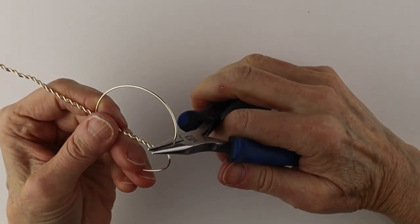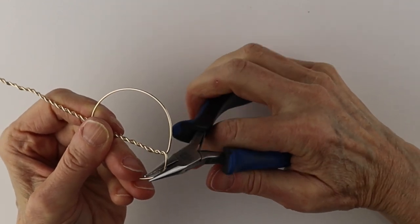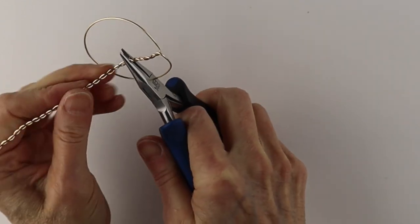You can adjust the edges to round them out a little bit more. They'll get a little distorted when you bend it down and then bend the twisted wire straight up.